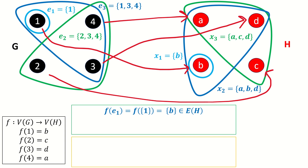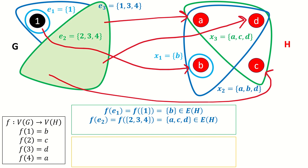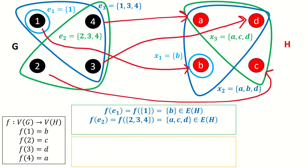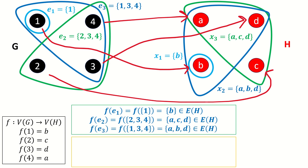Starting with edge E1, the image of E1 — which is just the set containing 1 in G — is the set containing B in H, which is an edge in H. Next, the image of E2 is the set containing A, C, and D in H, which is an edge. Finally, the image of E3 is the set containing A, B, and D in H, which is again an edge.